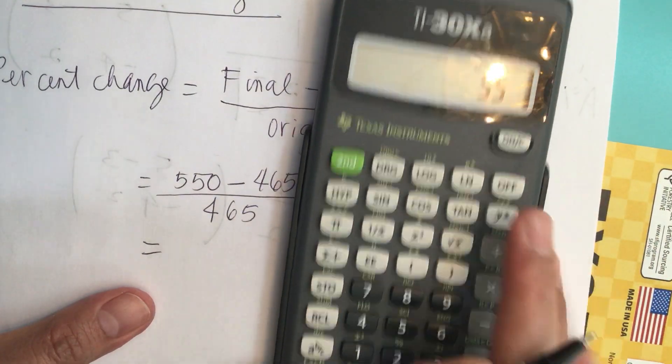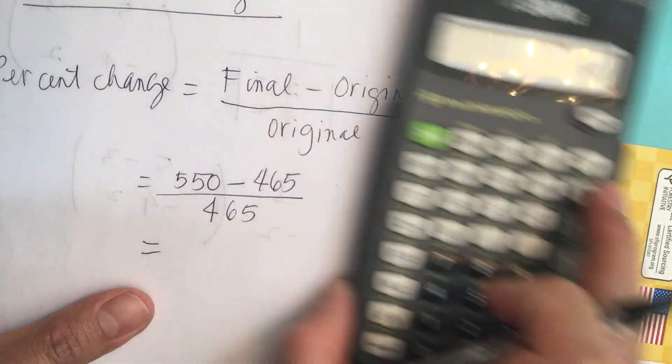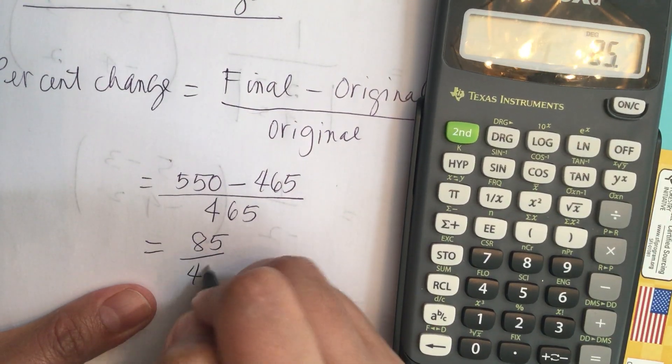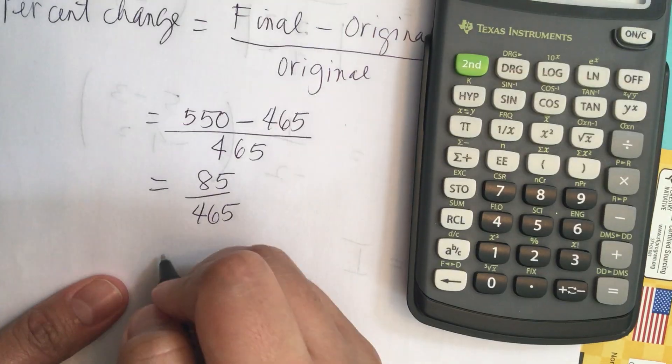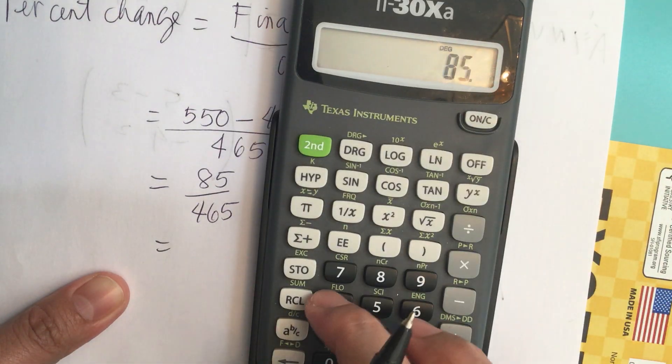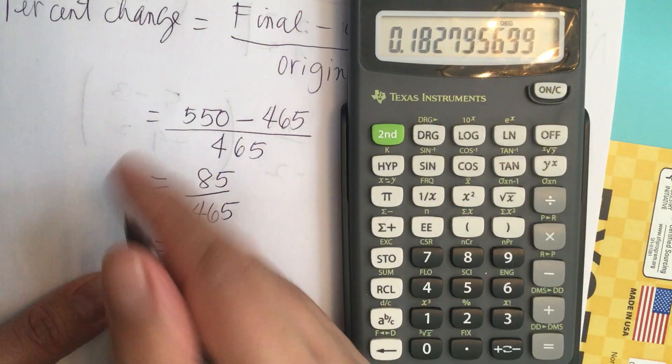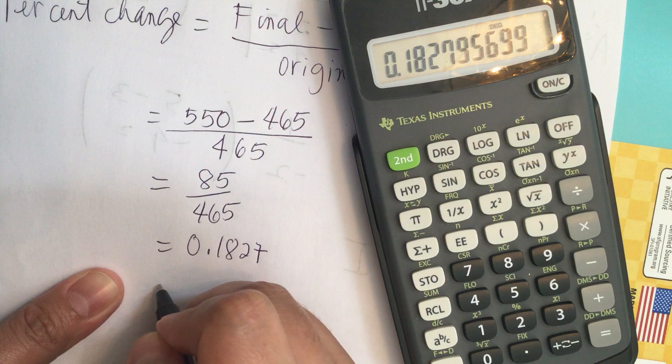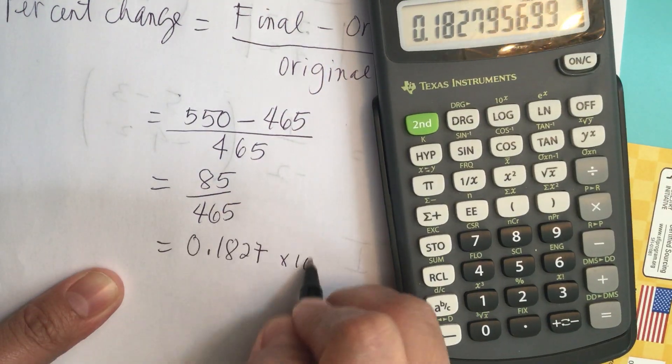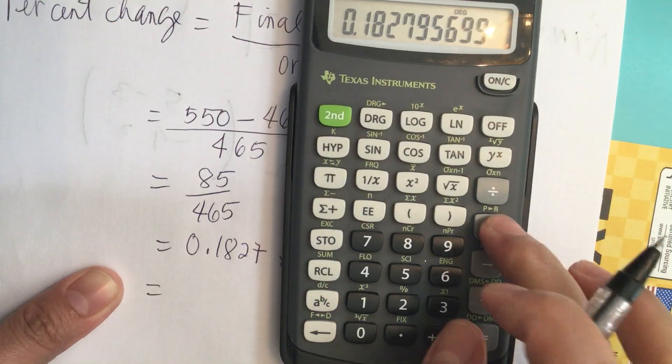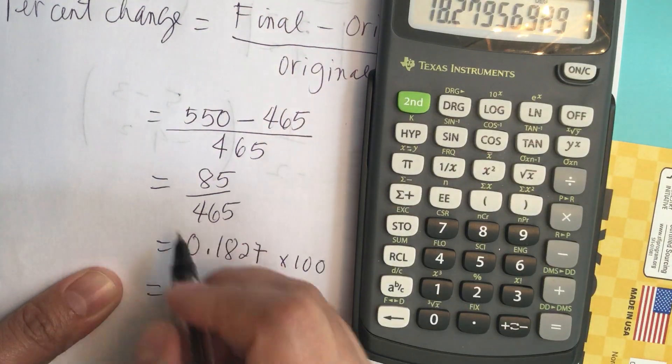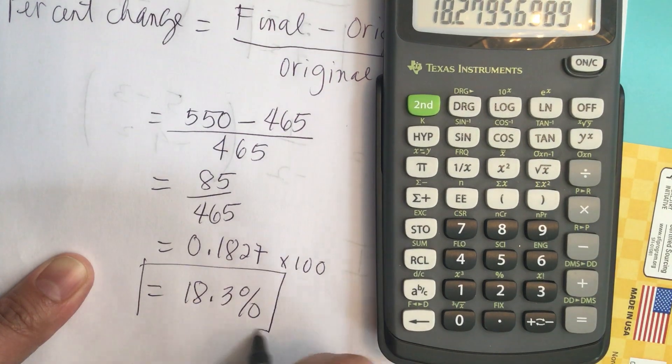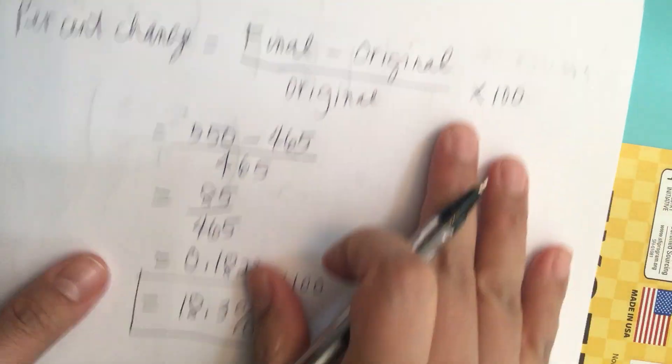So 550 minus 465 equals 85 over 465. This equals 85 divided by 465 equals 0.827, and then we multiply it by 100 to get the percent, so times 100 equals 18.3 percent. So 18.3 percent is the increase.